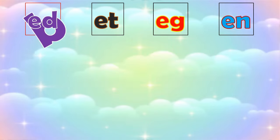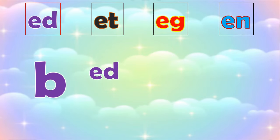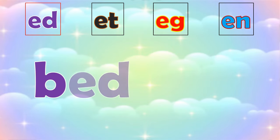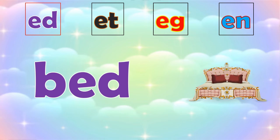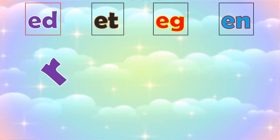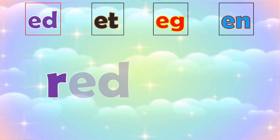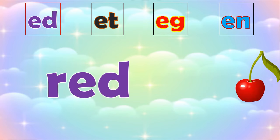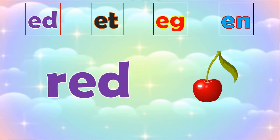Let's start! -Ed word family. B, ed — bed. B, e, d — bed. R, ed — red. W, e, d — red.